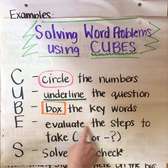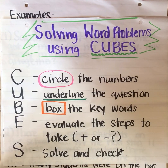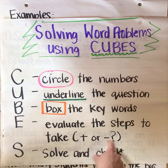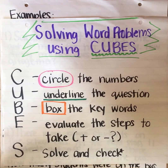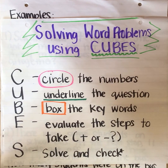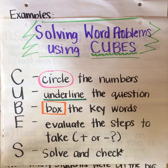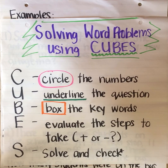E stands for evaluate the steps to take, and that just means are you doing addition or are you doing subtraction? So we've learned how to do both of those things. Now you take what you know and figure out which one it's asking. The thing to remember is when we learned about addition and subtraction we learned about key words — for addition they would be all together, some, or more. Those are key words that mean addition. Some key words that mean subtraction would be difference, minus, take away. So you need to look for those key words in the word problem.